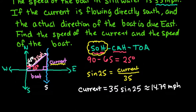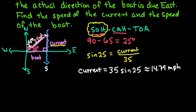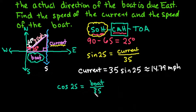Now we can find the boat speed. That's our last thing that we need to find, and our boat ends up being the adjacent next to the 25 degrees. So that tells us that we're going to use cosine for this one. We can say that the cosine of 25 is equal to the boat speed over 35.